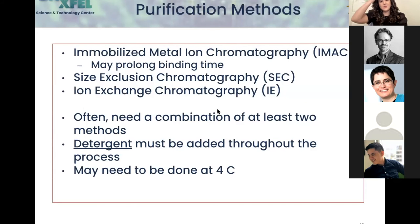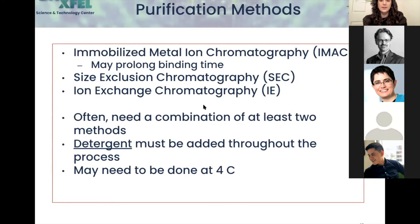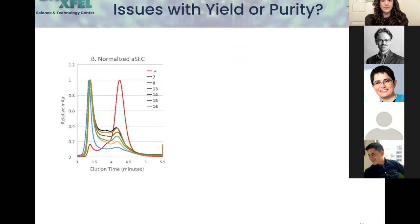For the purification part, it's fairly straightforward — you use IMAC. You might prolong the binding time with membrane proteins; instead of running it on a standard column, you might add the resin directly to your protein and rotate for a specific amount of time to make sure they bind well, in case there is less accessibility due to the micelles. Then you might do size exclusion, ion exchange — it depends on your protein and if you have a pure enough sample. Make sure detergent is added throughout all of these steps in every buffer, and work at 4°C to make sure nothing crashes out.